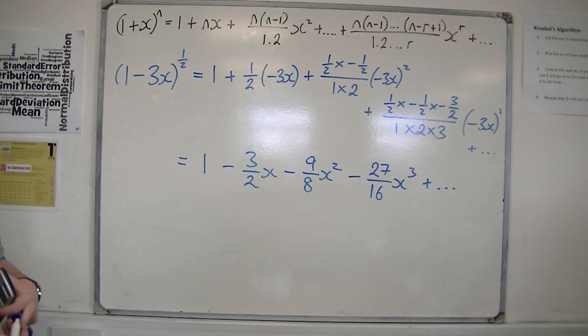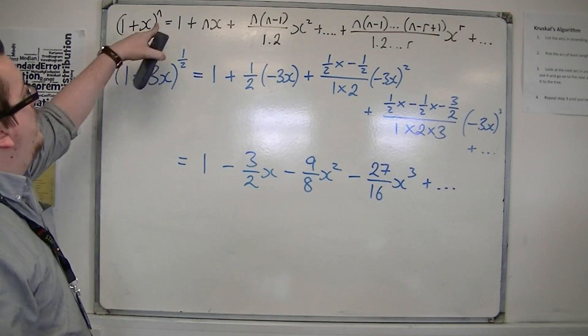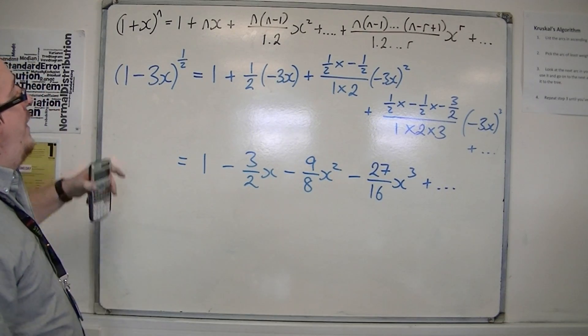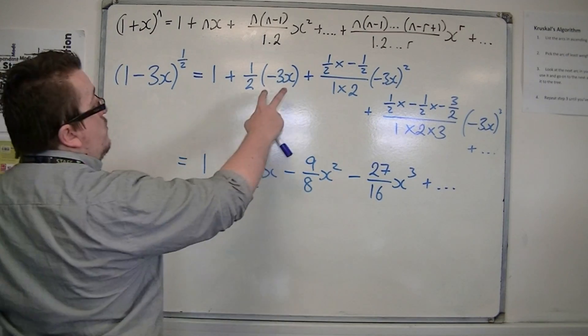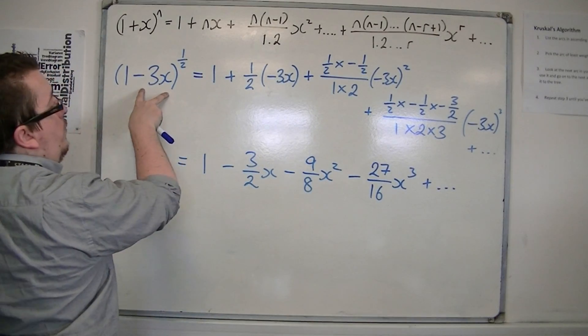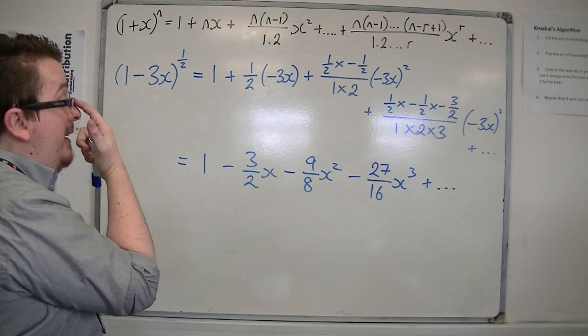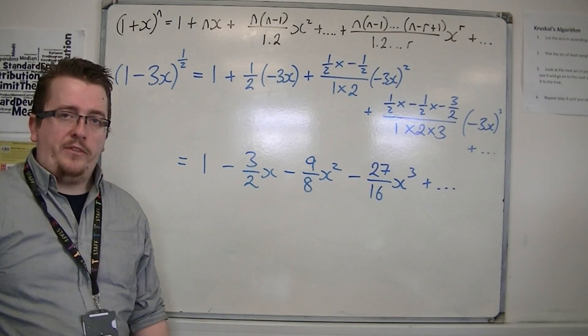That's how we can substitute into the binomial expansion when it's looking like this. Make sure you're using a bracket around your -3x in this case to avoid any silly mistakes with the coefficients.